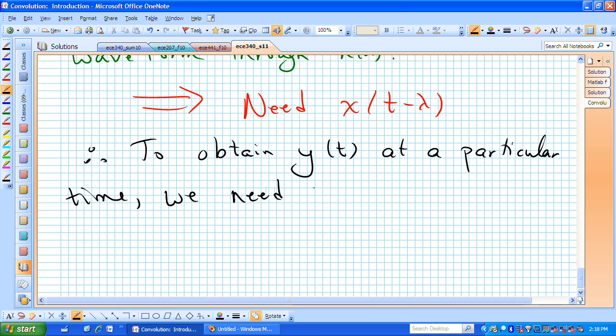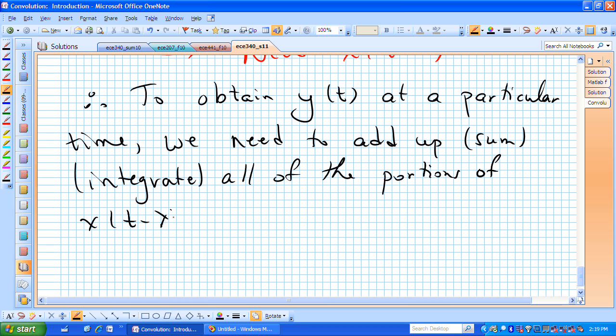We actually need to add up or sum or integrate all of the portions of x of t minus lambda and h of lambda, their point by point product, and sum up those particular products that have been active up to the point in time in question, which we've called t, up to this point in time t. And that's actually what gives rise to our convolution integral.